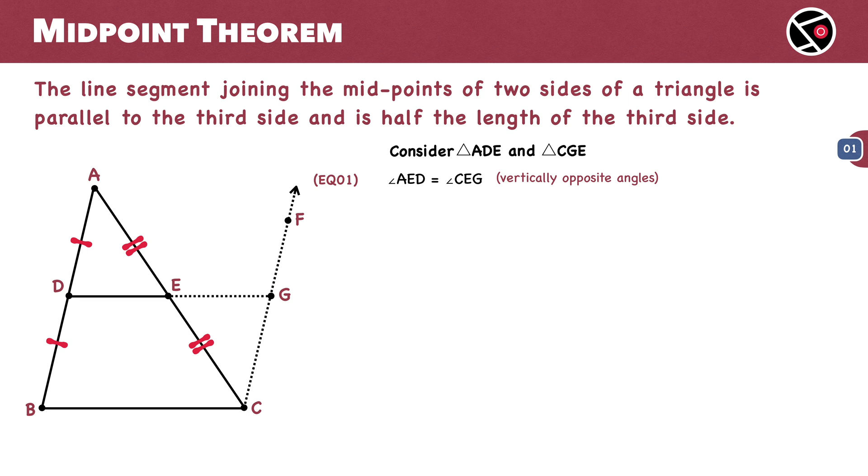We know that E is the midpoint of AC. So, AE equals CE. This is equation two.